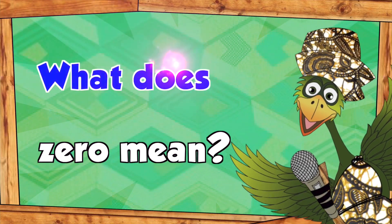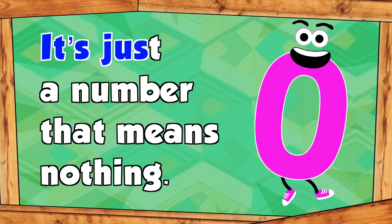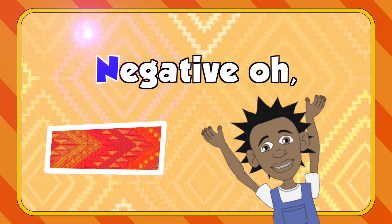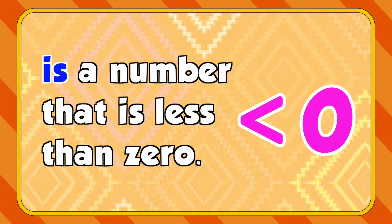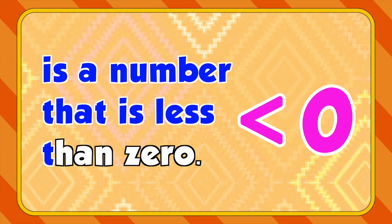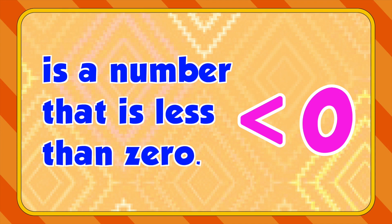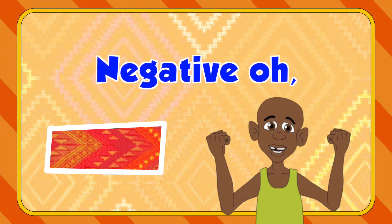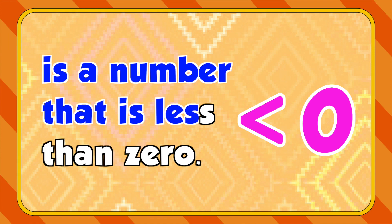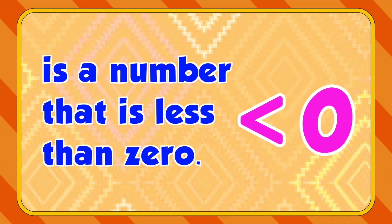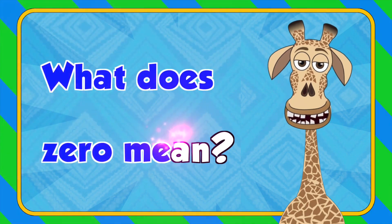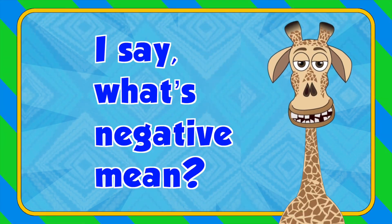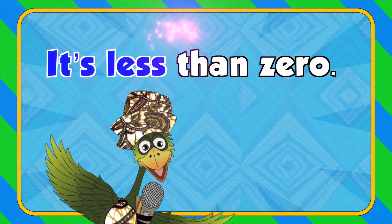What does zero mean? It's just a number that means nothing. Negative — it's a number that is less than zero. Negative — it's a number that is less than zero. What does zero mean? It's nothing. What does zero mean? I said it's nothing. I said what's negative mean? It's less than zero.